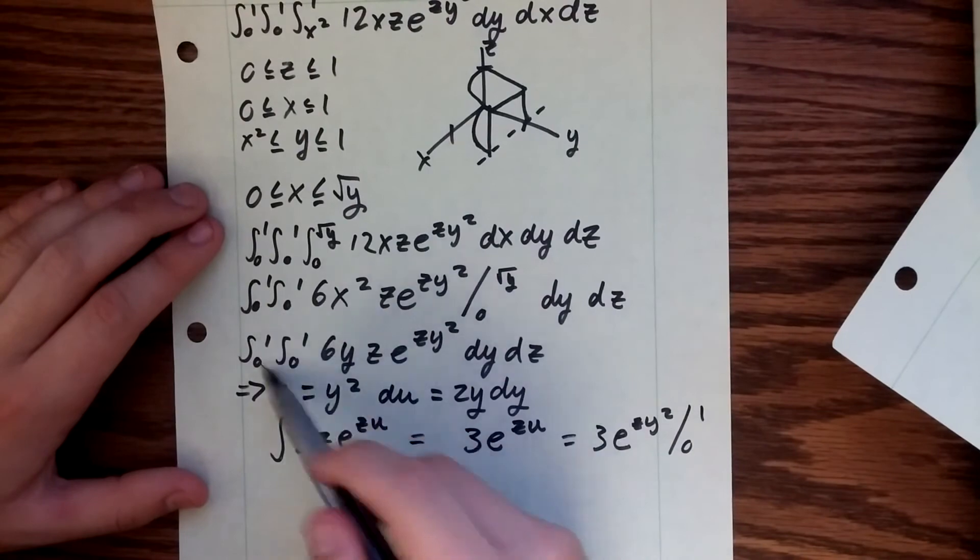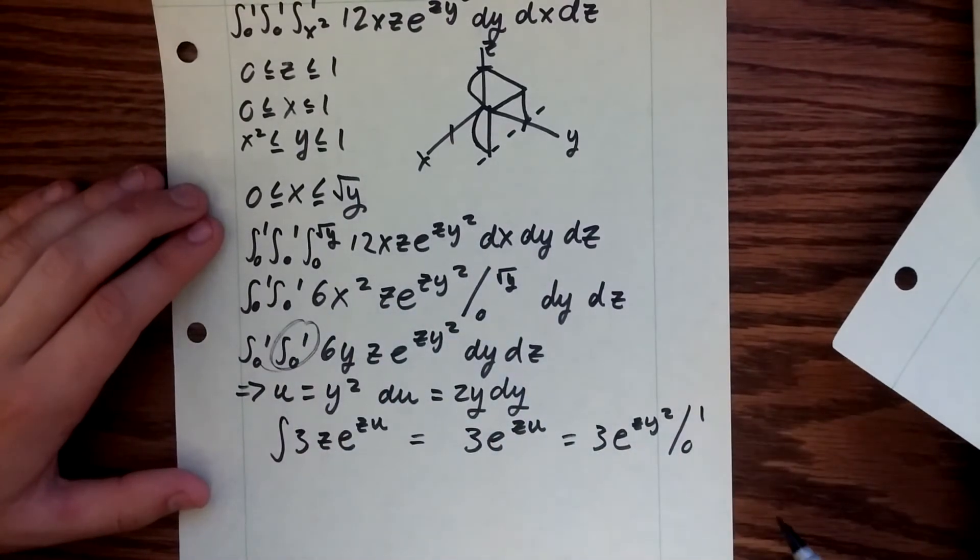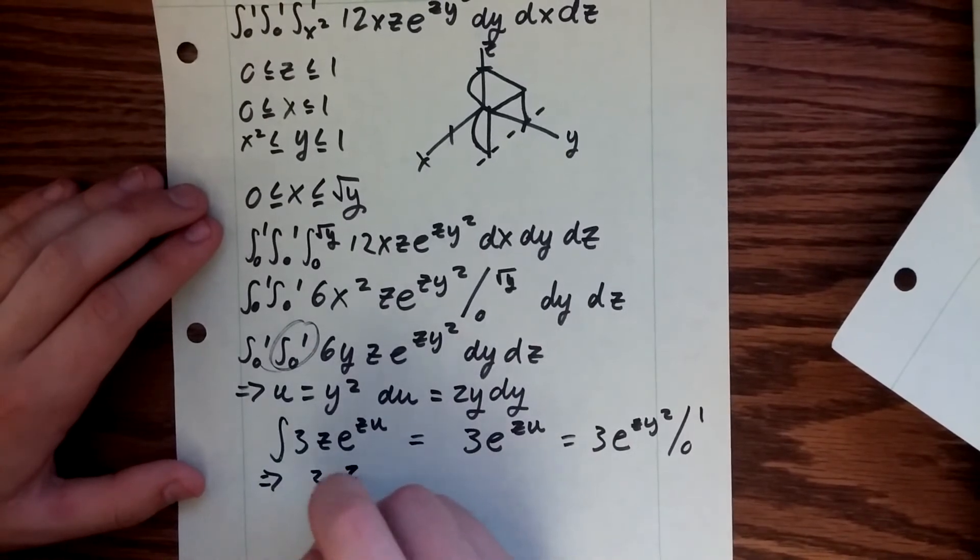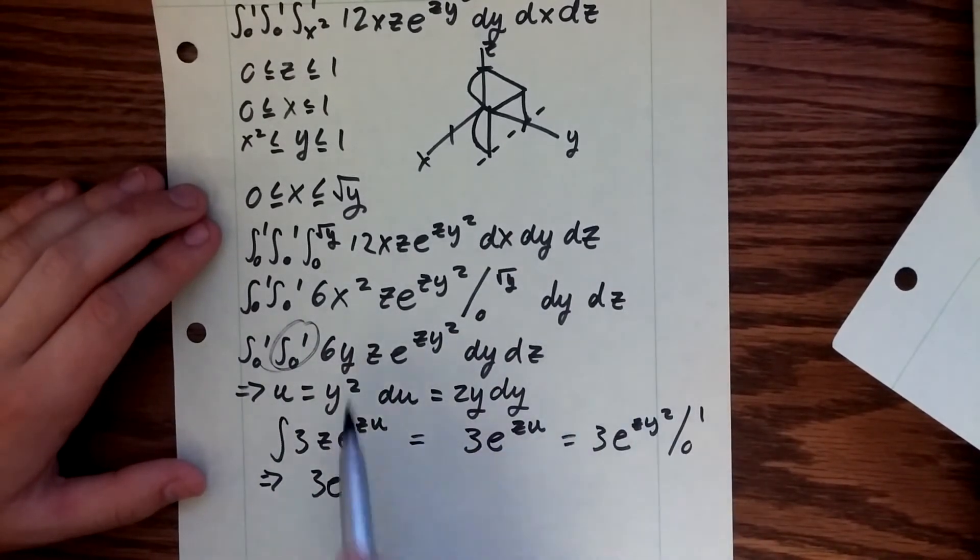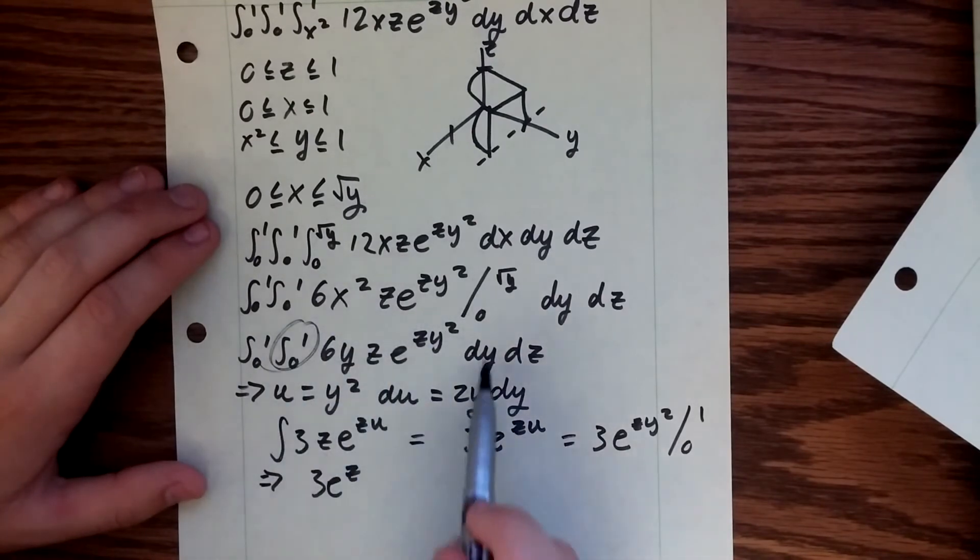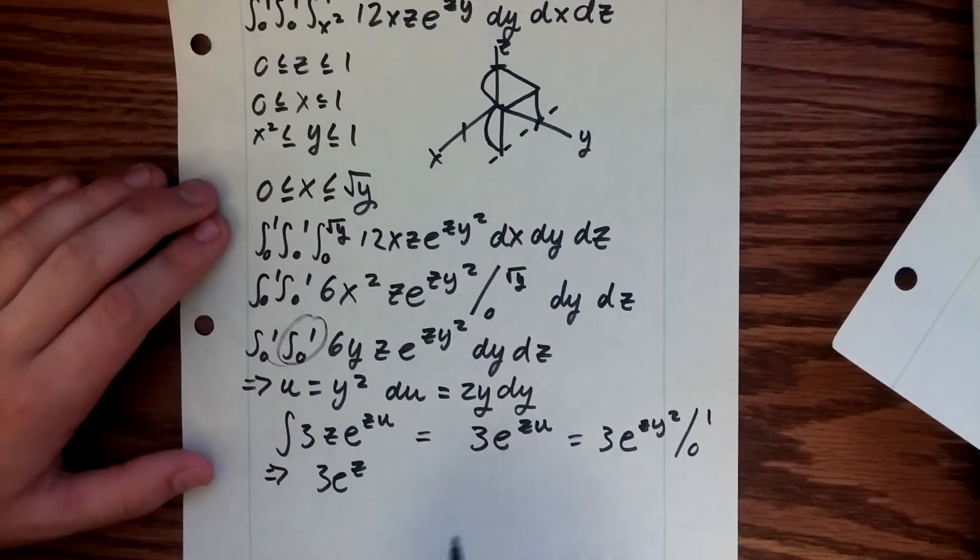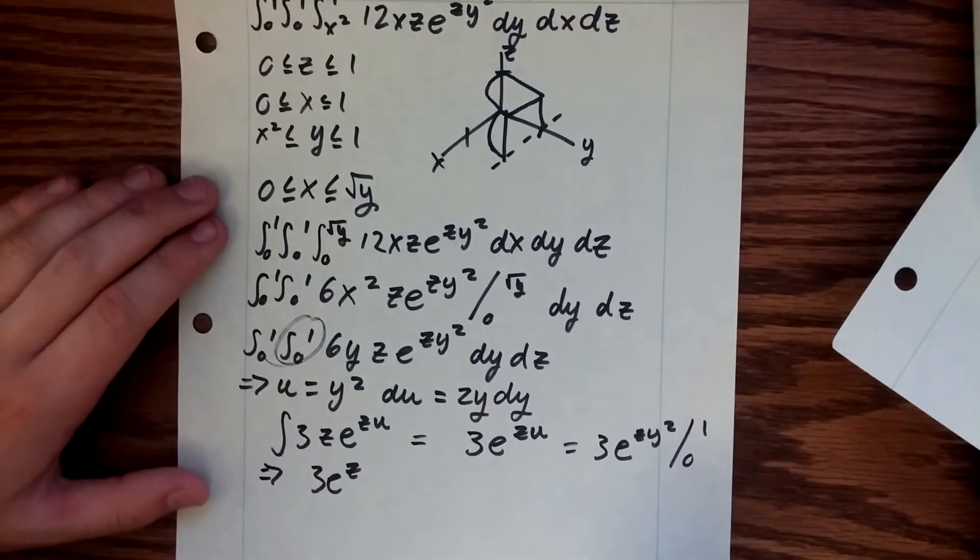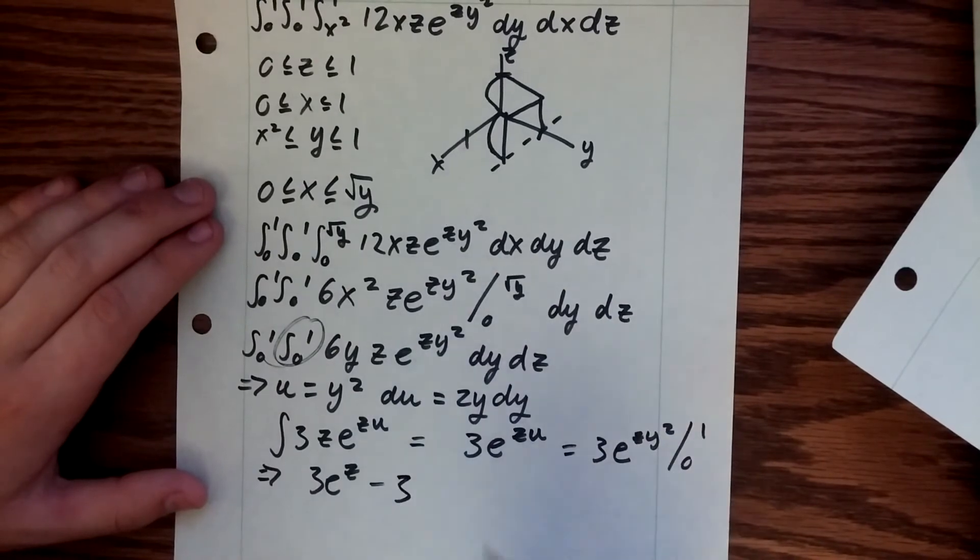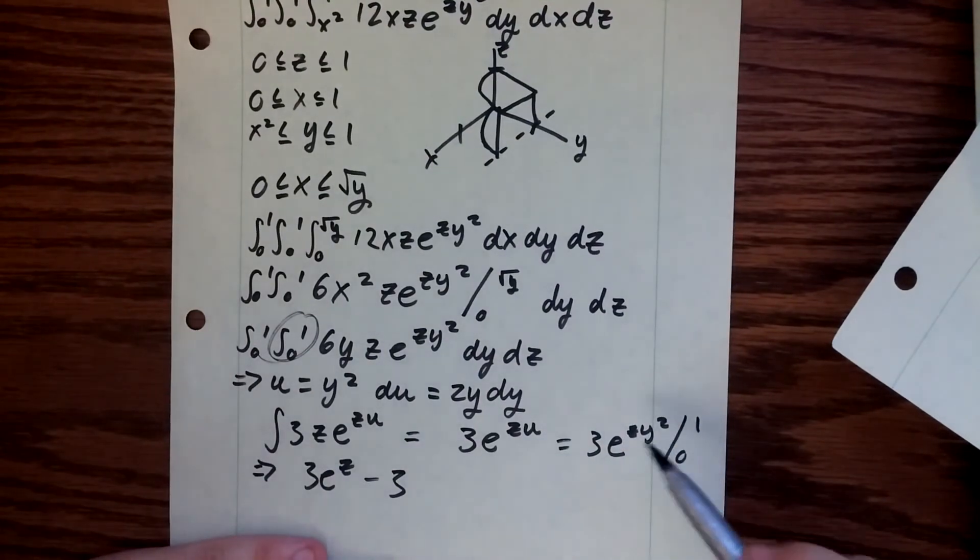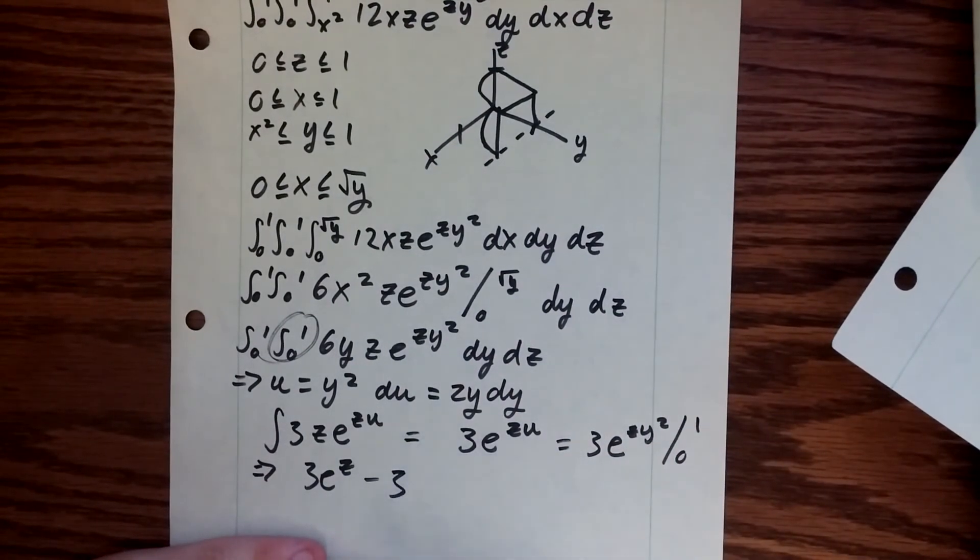With our bounds here from zero to one, so we end up with just 3e^z. Remember, this u-substitution was just for this inside integral, so we're going to have to go and evaluate our final integral. We have to add that minus 3 in there, because when you evaluate the 3e^(zy²), when you have e to the zero, you need to account for that with that negative 3.